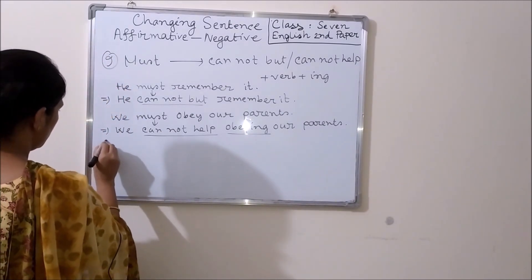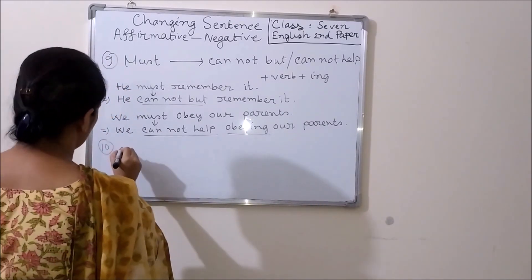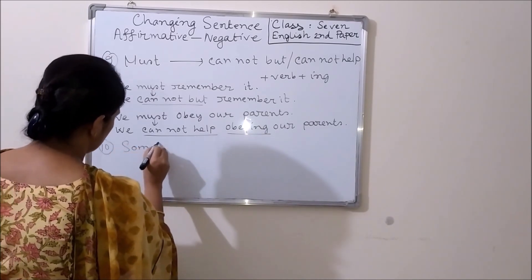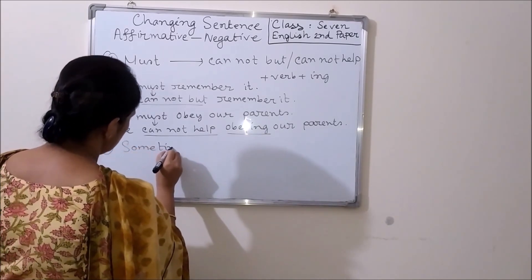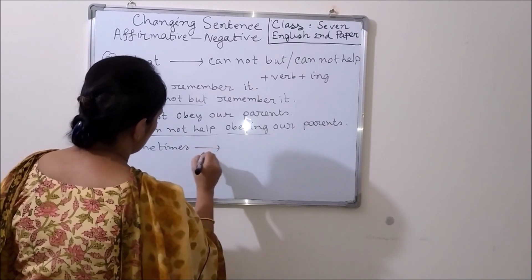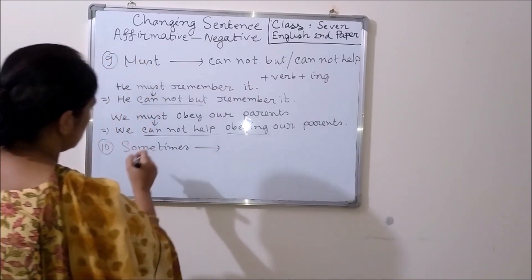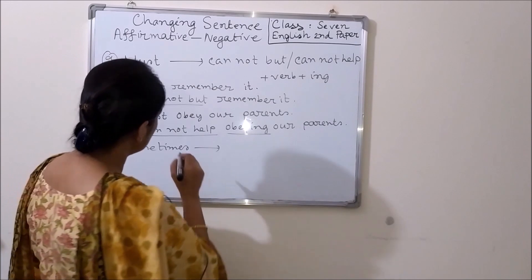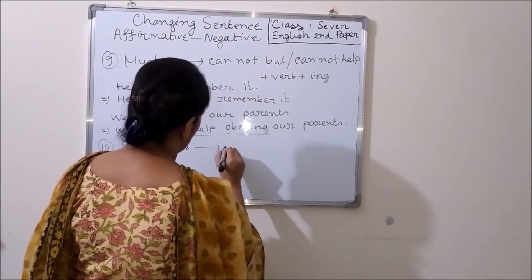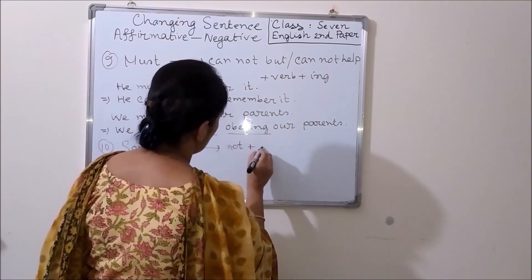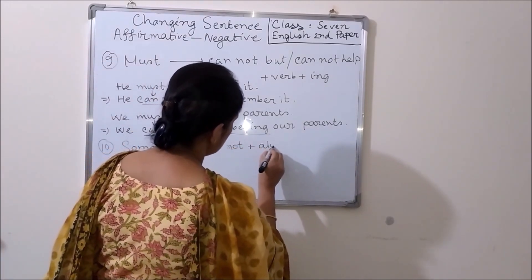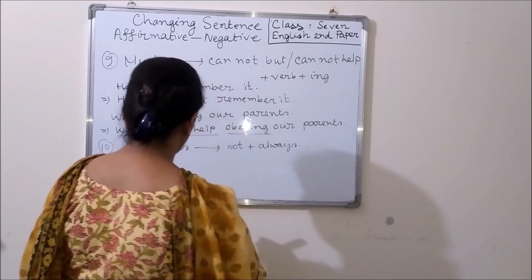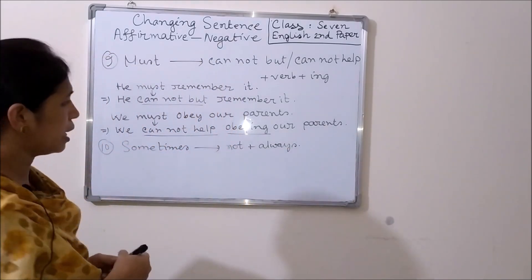Come to the next rule. Rule number 10. Sometimes 'sometimes' is an adverb and we can get this adverb in an affirmative sentence. We have to use 'not always' to make the affirmative sentence into negative.